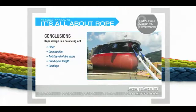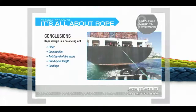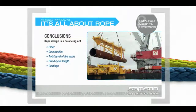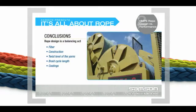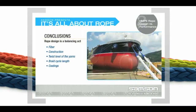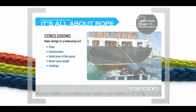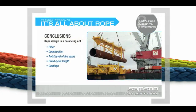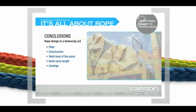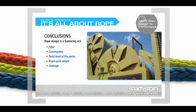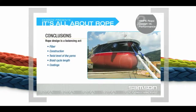As we stated at the beginning, rope design is a balancing act. The engineers' choices of fiber, construction, twist level of the yarns, braid cycle length, and coatings all have an effect on the useful, safe service life of the rope. It is these characteristics and how they are implemented in the finished rope that determine the applications for which the rope is best suited.